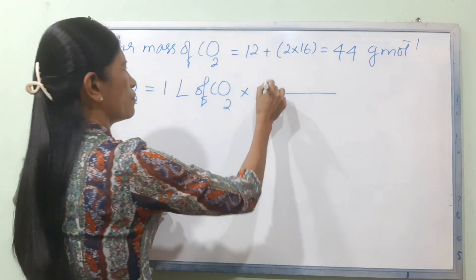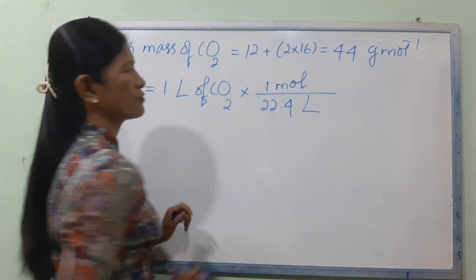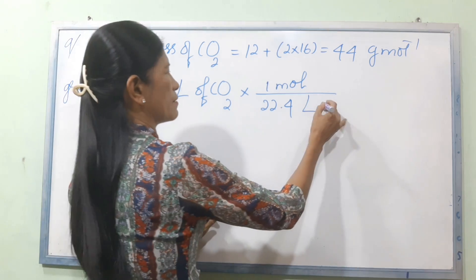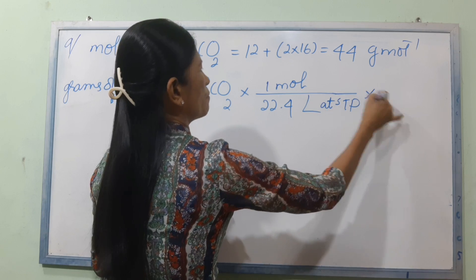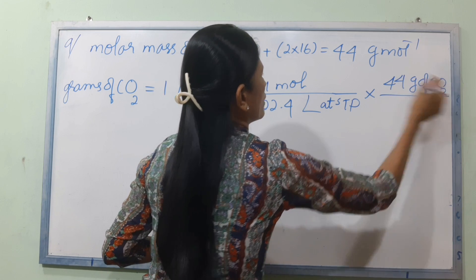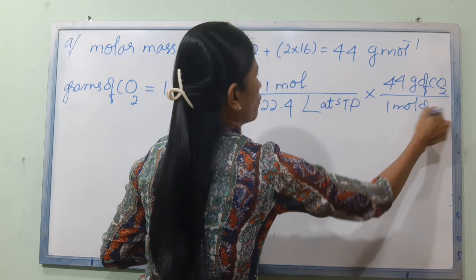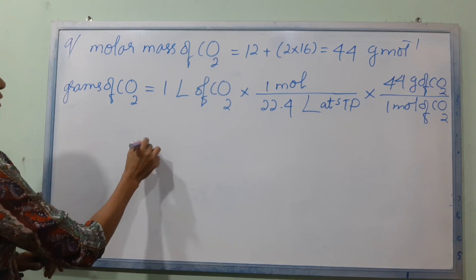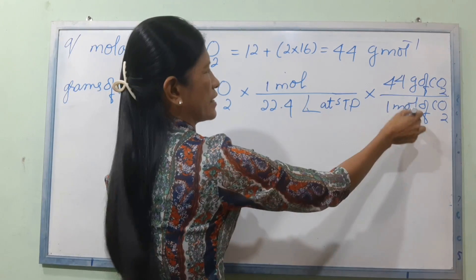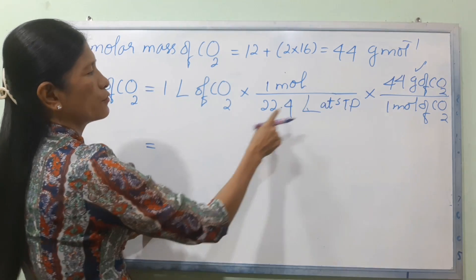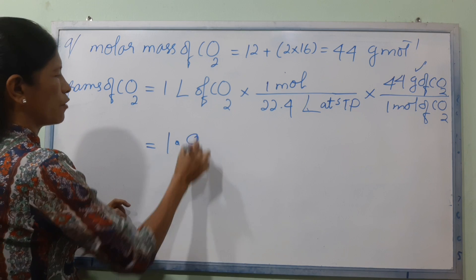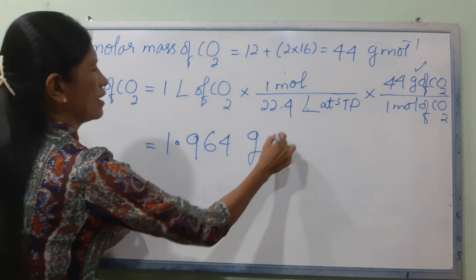The STP is 22.4 liters of CO2. The STP is 24 grams per mole. The STP is 24 grams of water. So let's put it outside.